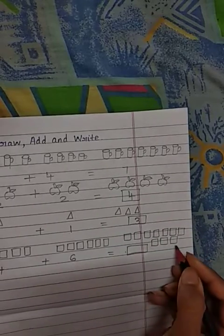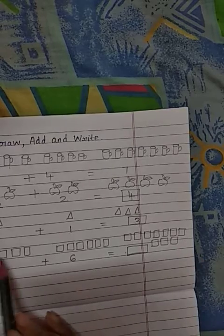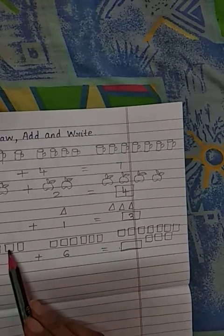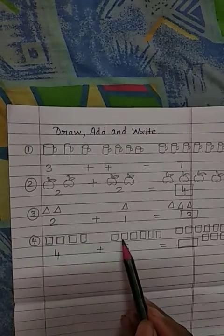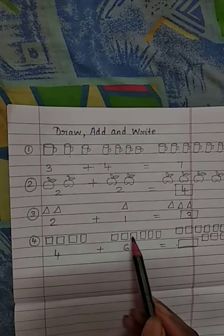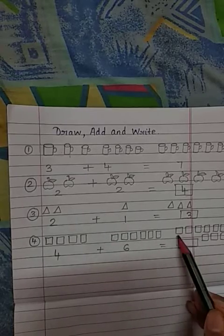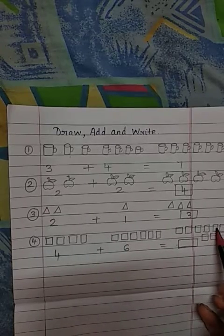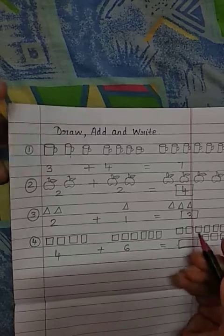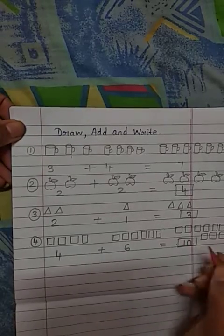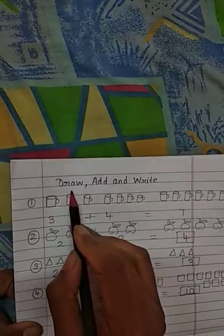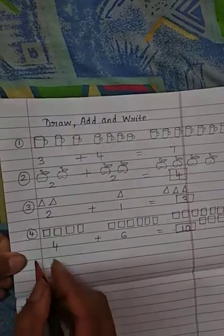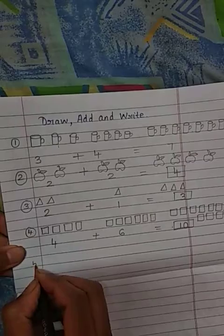So how many are there children? We will just count. 1, 2, 3, 4, 5, 6, 7, 8, 9 and 10. So 10 we will write the answer after adding. This is means draw, add and write. Another example we will see here.